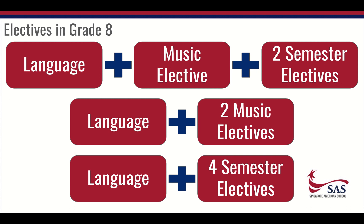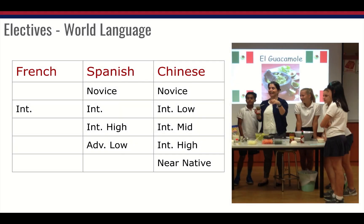There are three main ways that students can build electives this year. First, students can take a full year language plus a full year music elective plus two semester electives. Second, a full year language plus two music electives. Third, a full year language plus four semester electives. All students in grade eight are required to take a world language unless you have an official school-based exemption. We have French, Spanish, and Chinese, meeting every day for the full year. You will have been recommended for a language level by your current teacher.